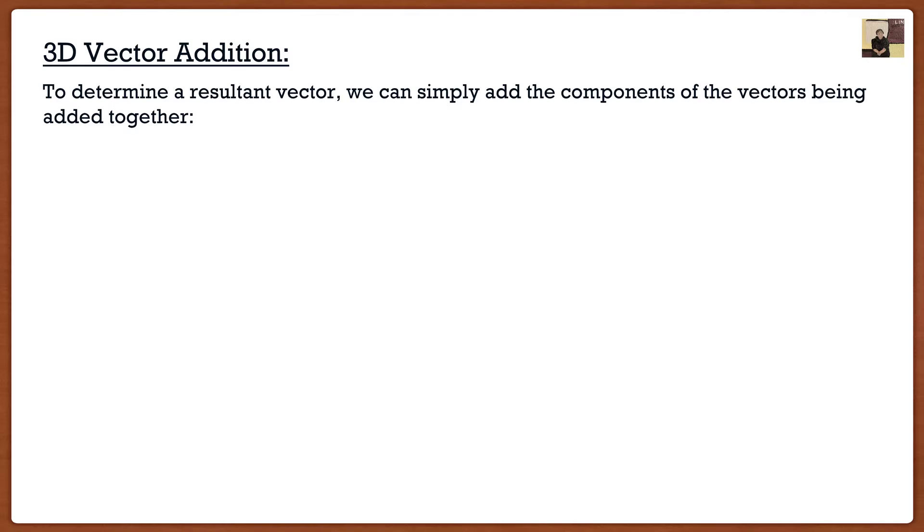Well if we have all of our vectors in Cartesian vector notation we can add them using the same process as before where the x component is simply the summation of all the x components, the resultant y component is the summation of all the y components, and the only thing we're doing is we're now adding those z components. We just take them and add them all together.